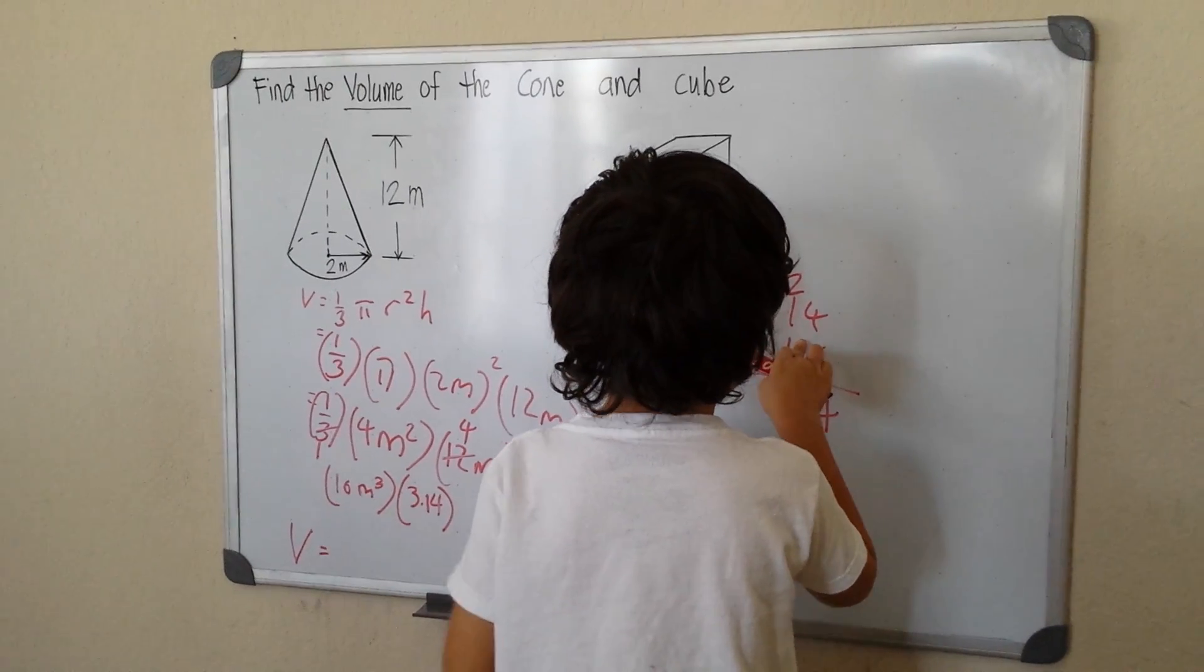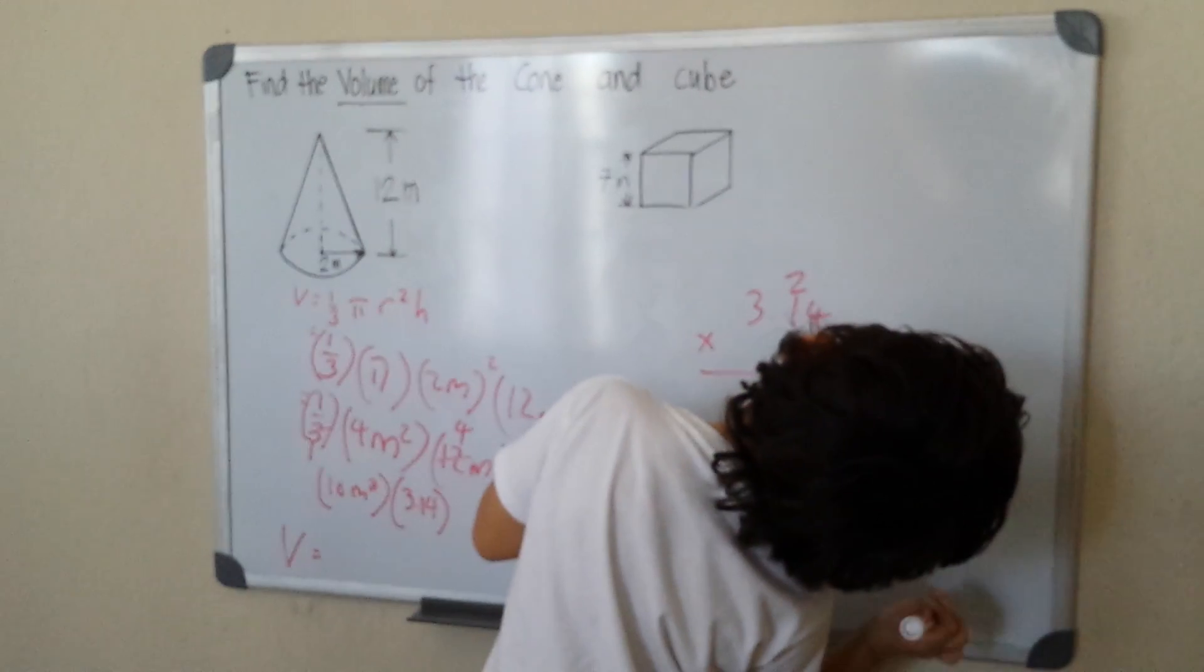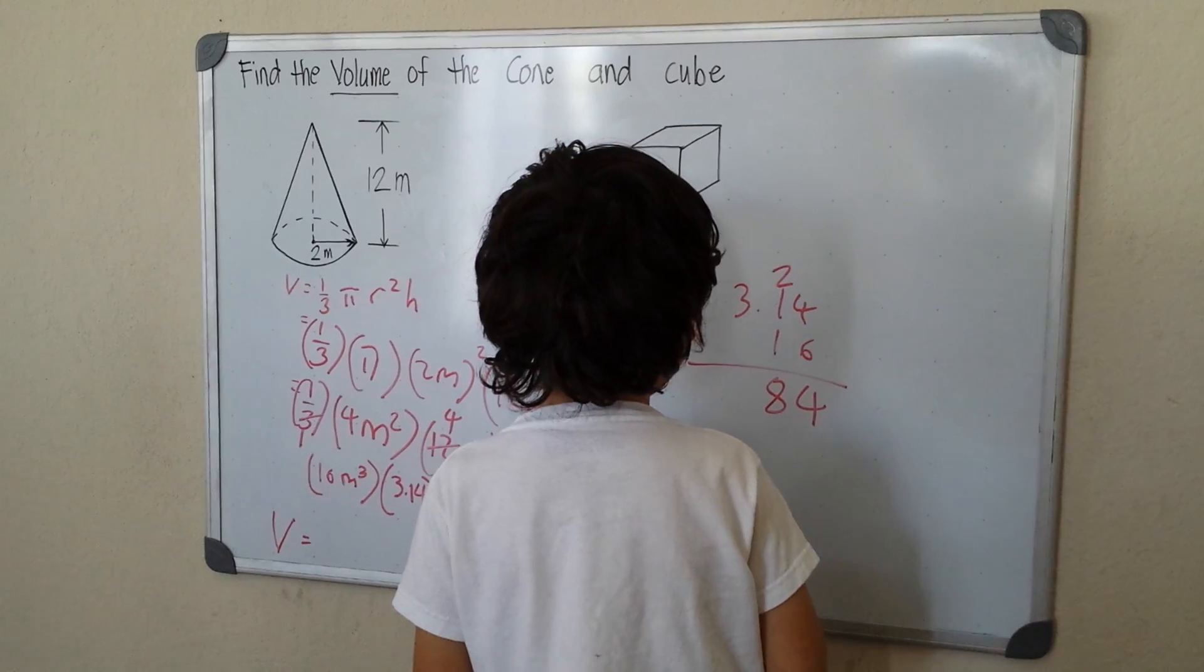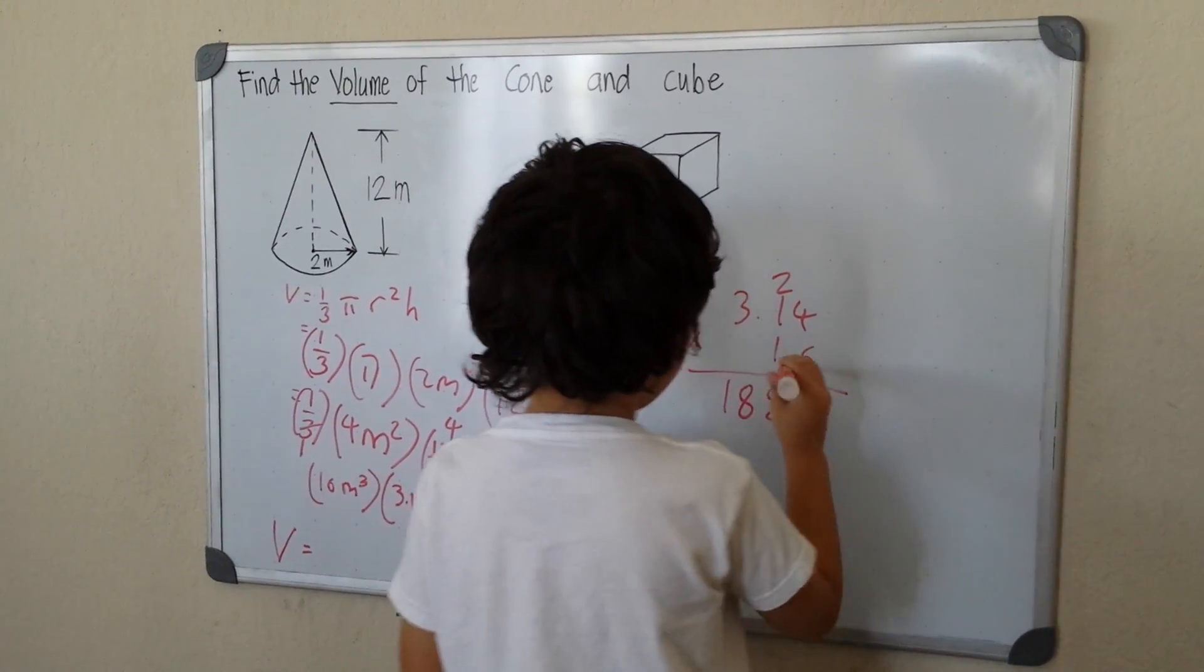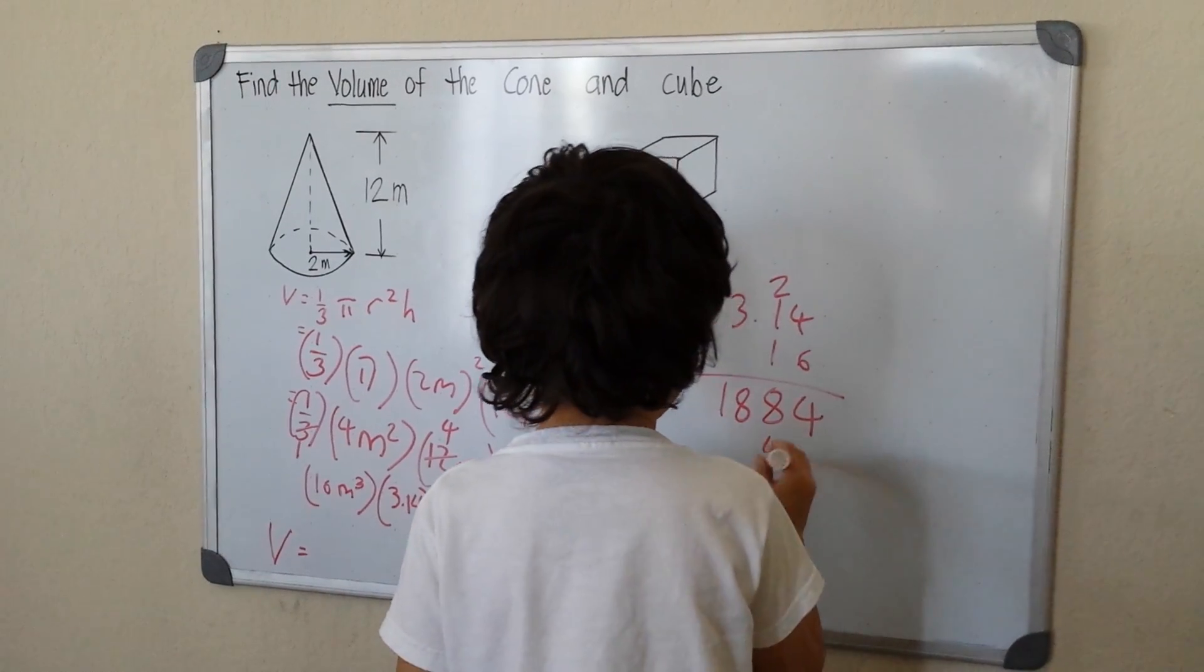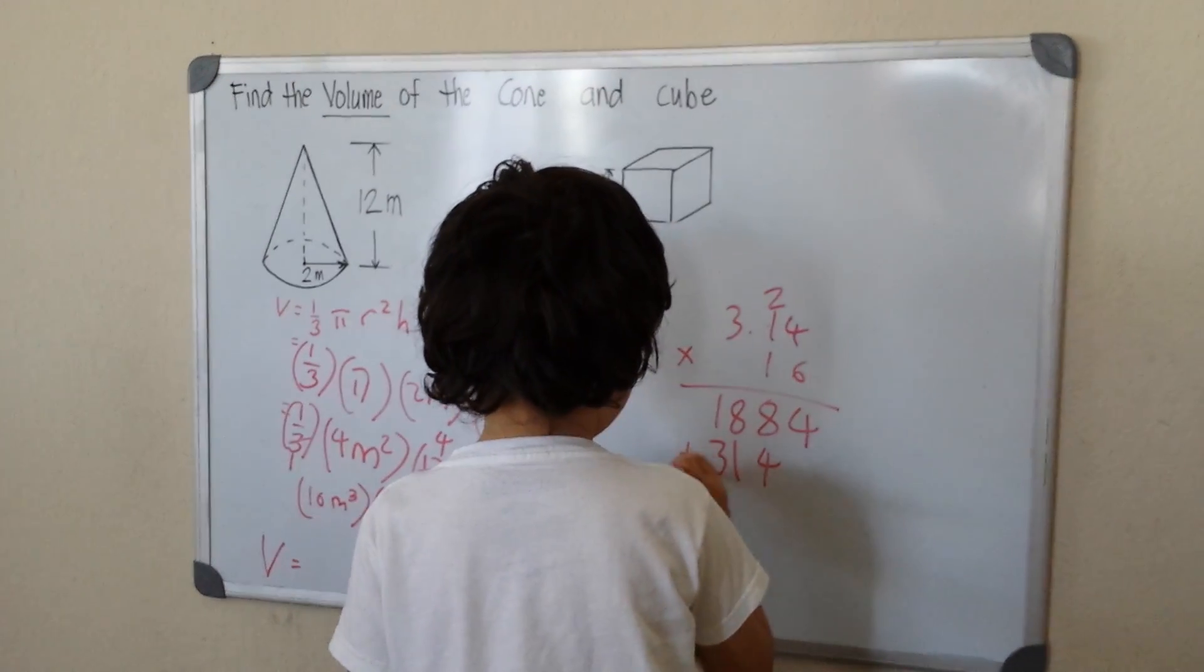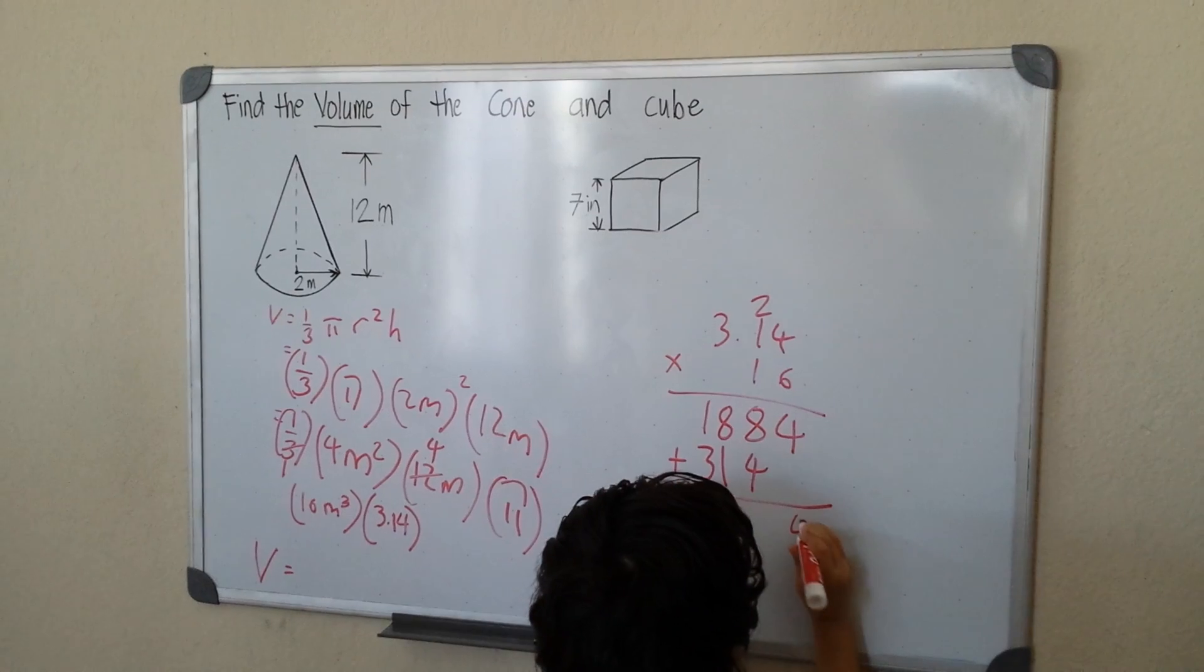6 times 1 will be 6, plus 2, that will be 8. 6 times 3 will be 18. So 1 times 4 is 4, 1 times 1 is 1, 1 times 3 is 3. So we add them up.